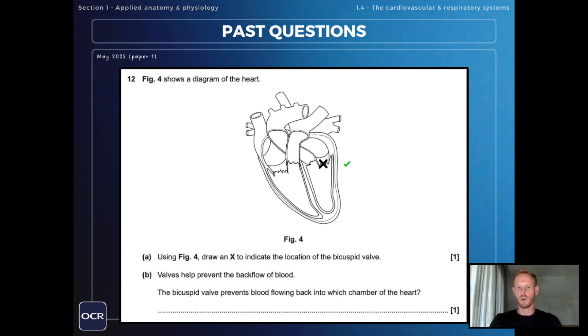The second part of the same question: valves help to prevent the backflow of blood. The bicuspid valve prevents blood flowing back into which chamber of the heart? And as I've already mentioned that is the left atrium.